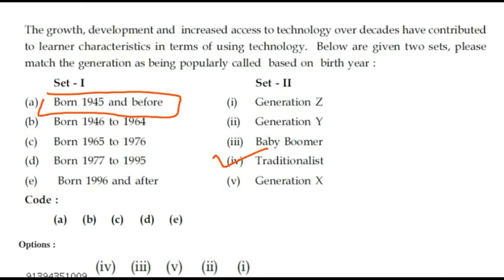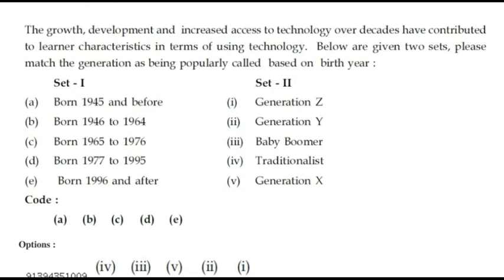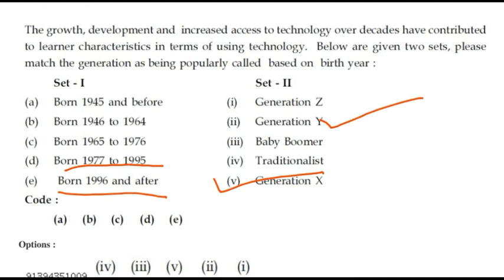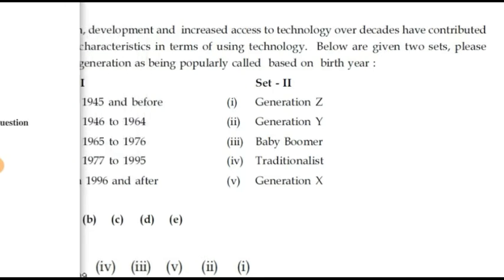Those born between 1946 and 1964 are baby boomers. Those born between 1965 and 1976 are Generation X. Those born from 1977 to 1995 are Generation Y.